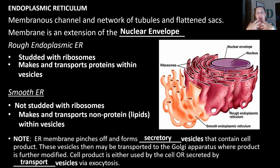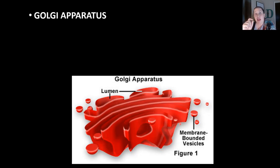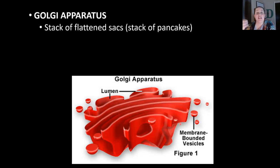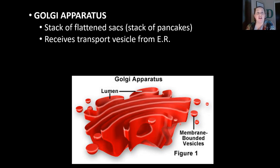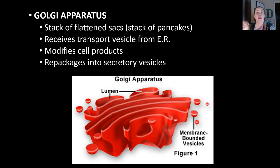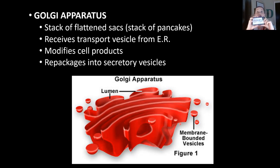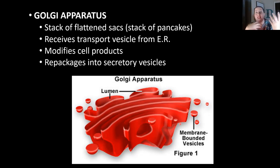The Golgi then modifies whatever the product is and gets it ready to be transported elsewhere — whether within the cell itself or out of the cell. The Golgi apparatus looks like a stack of pancakes. When the Golgi receives the different vesicles from the rough and smooth ER, it modifies them and repackages them for transport. I like to compare the Golgi apparatus to a UPS store — you bring in an item, they package it, and ship it out. When substances come to the Golgi, it determines how to package it up, modifies it, and sends it where it needs to go.